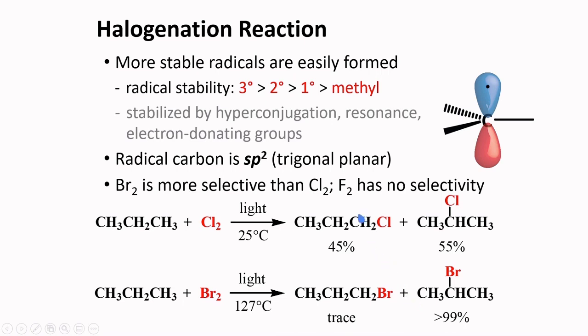Fluorine has no selectivity. The reason is it reacts very fast. Iodine reacts too slowly and its halogenation reaction is not synthetically useful.